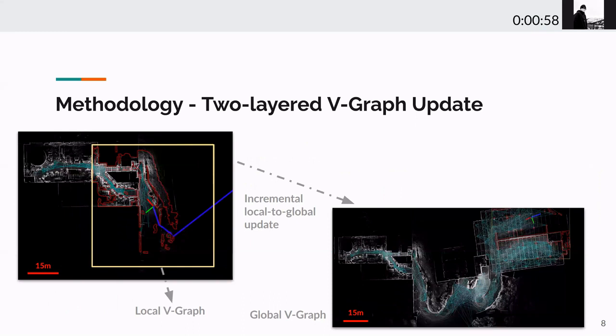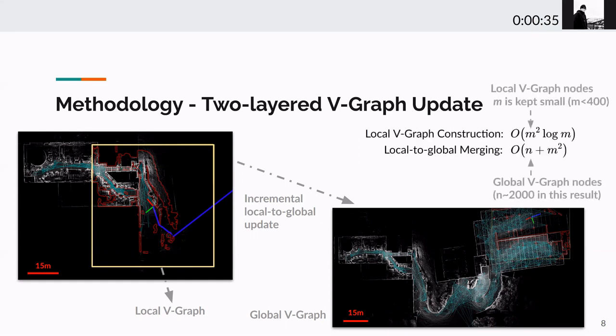The second challenge is the computational complexity. We deal with this challenge by using a two-layer data structure to construct a visibility graph incrementally. First, we define a local range centered at the robot. For each planning cycle, we construct a local visibility graph inside the local range. Then, we merge the local graph into the global graph. This way, we limit the computational complexity of constructing the visibility graph from n square log n to m square log m, where m is the number of nodes inside the local range.